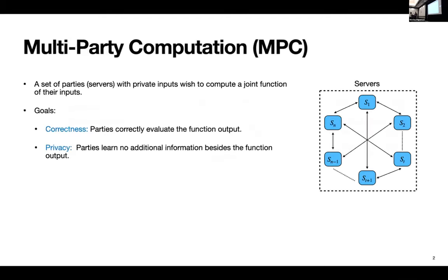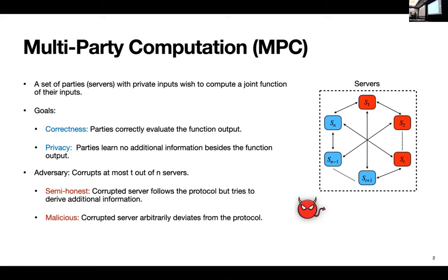So let's start with what is multi-party computation or MPC. It is where a set of parties or servers together want to compute a joint function on their private inputs. So what is the goal of this MPC? The goals are twofold. First is correctness, that the parties actually correctly evaluate this function output. And second is privacy, that parties learn no additional information beyond the function output during the execution of the protocol.